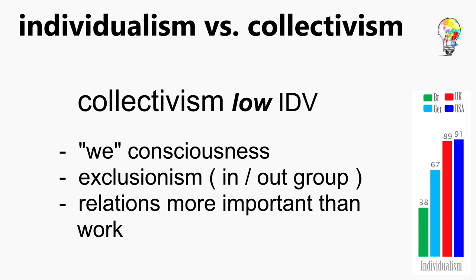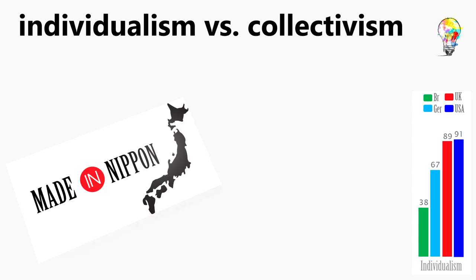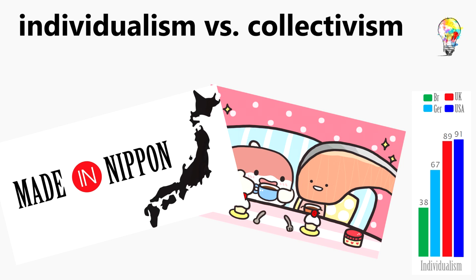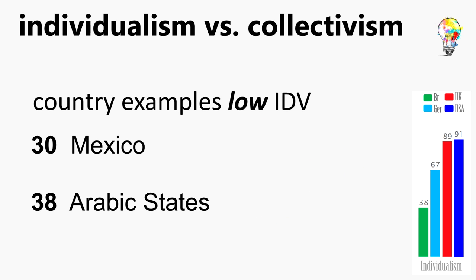In societies with a low individualism score, there is a predominant we-consciousness that leads to a collectivity orientation. There is also exclusionism — the classification of others into in-groups or out-groups — and relations are more important than tasks. The people of Japan, for example, prefer made-in-Nippon products, usually spend time together with their families, and group goals are always of utmost importance. Country examples with low IDV scores are Mexico with 30 and Arabic countries with 38.